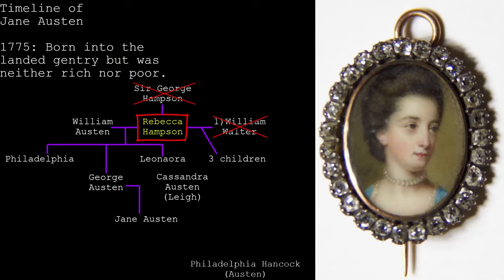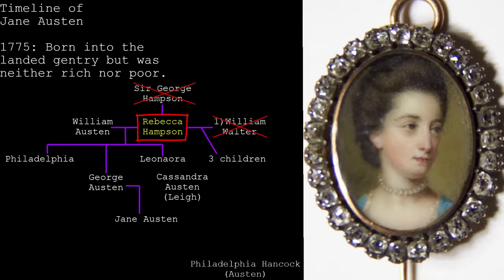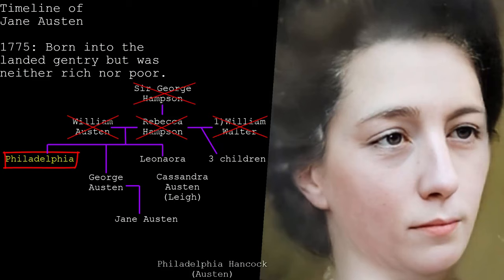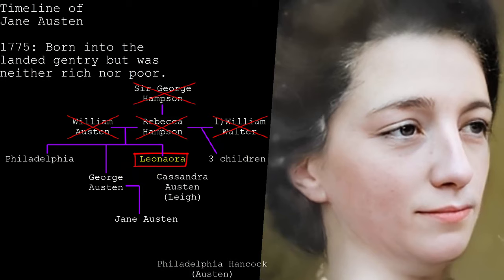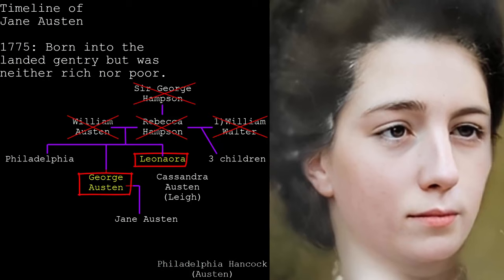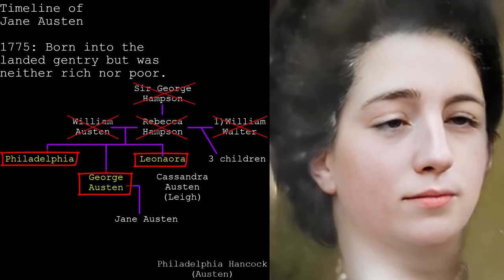Their marriage wouldn't last long — Rebecca died five years later in 1732 or 1733, and William died in 1737. Their eldest surviving child, Philadelphia, was nearly eight; George, Jane's father, was six; and Leonora was nearing four. Left orphaned, the Austen children were sent to live with relatives and were financially cared for by a trust their father had set up. George and Leonora went to live with their wealthy uncle Francis Austen of Sevenoaks.